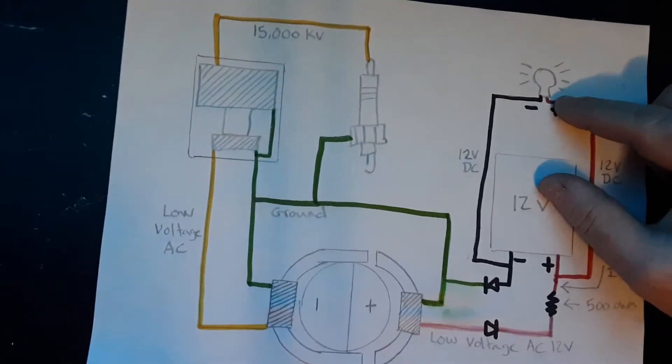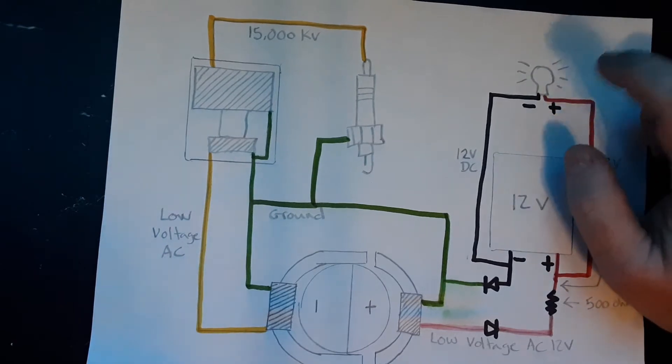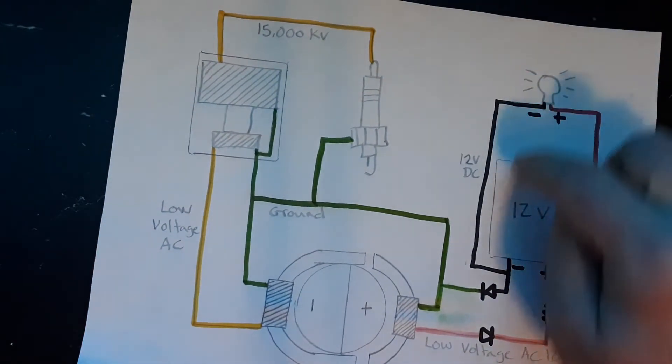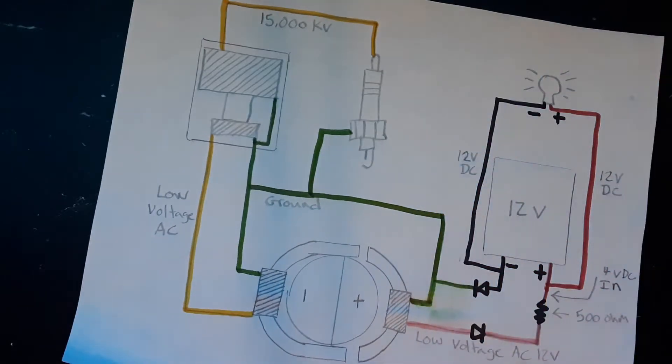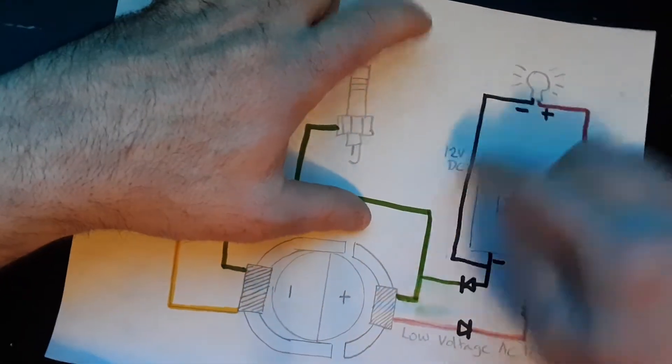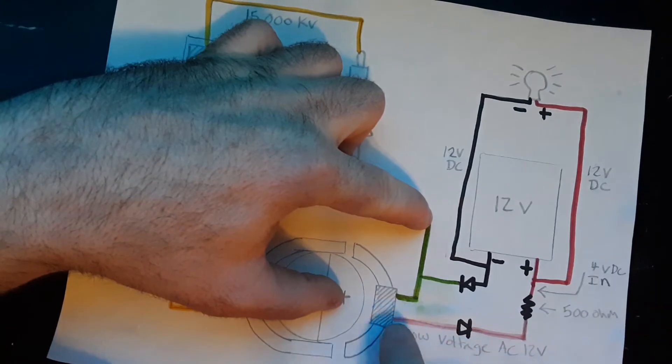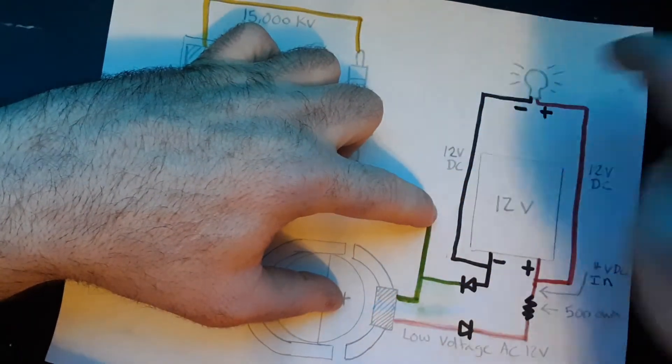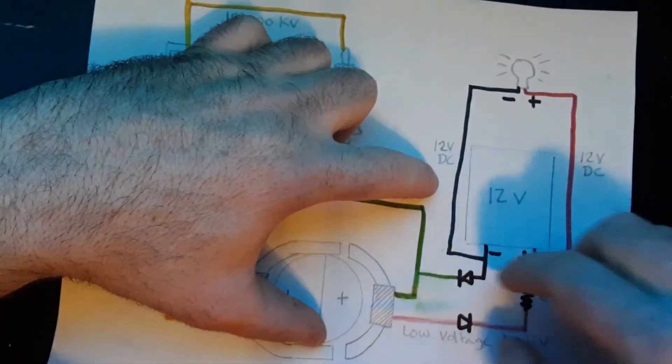What a lot of people do with this is they just run one wire up to a light. It has to be an incandescent light because LED runs off a positive and negative DC. Then the other one will go back to the ground, so you'll have a ground to your light. It's alternating current going to a 12-volt light because this puts out 12 volts.